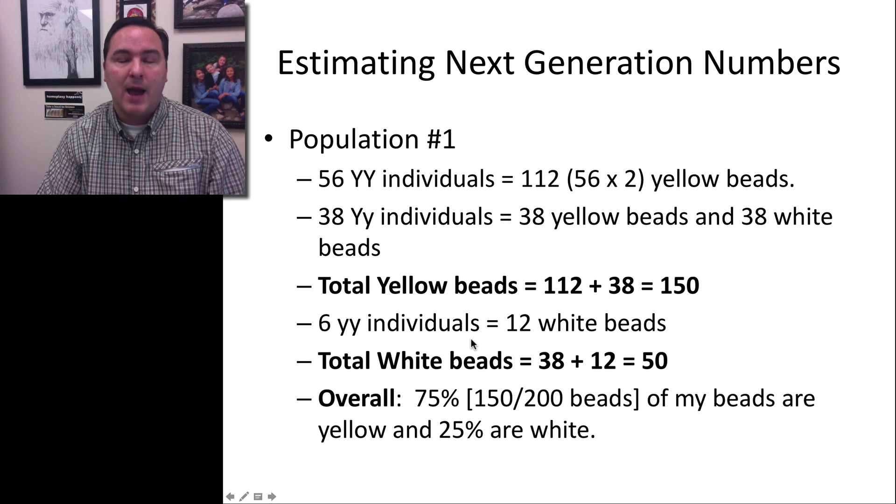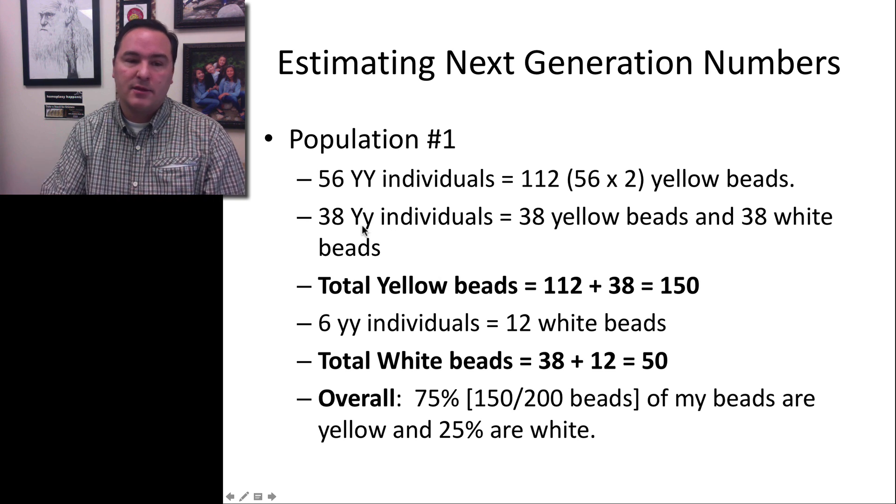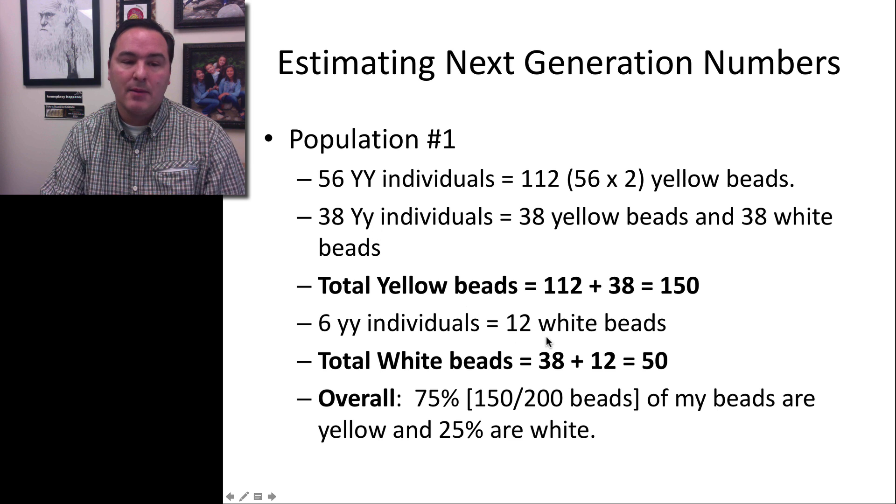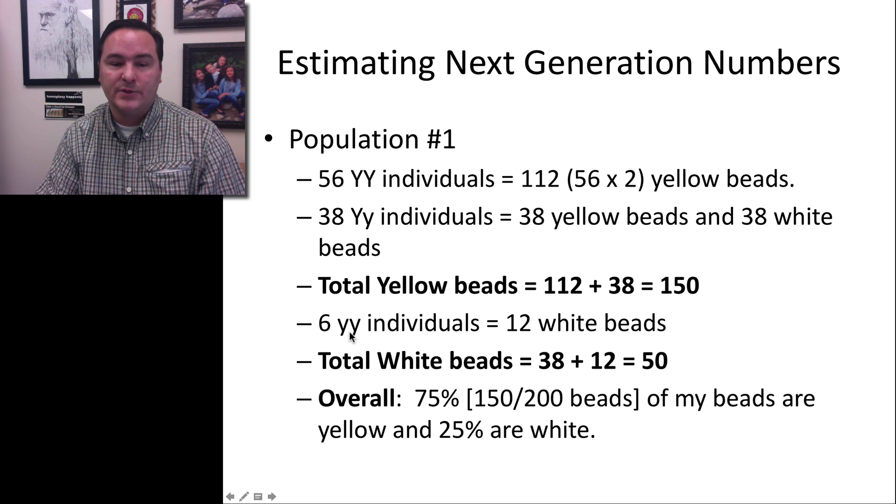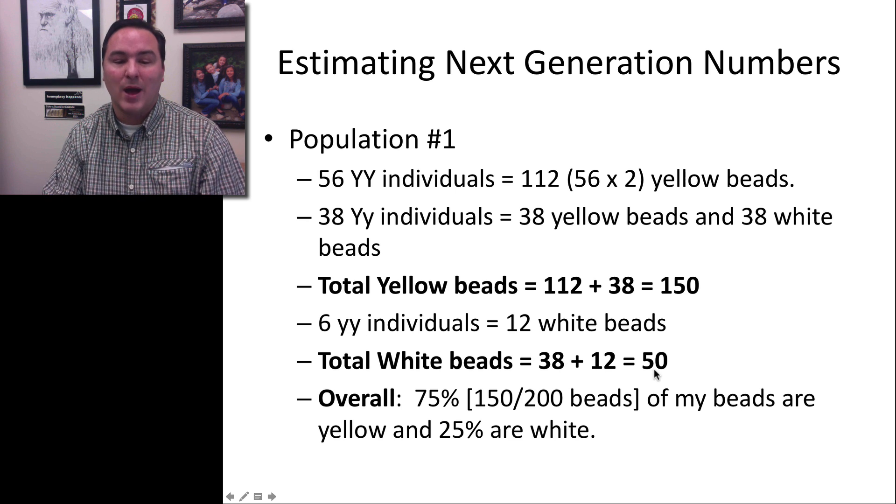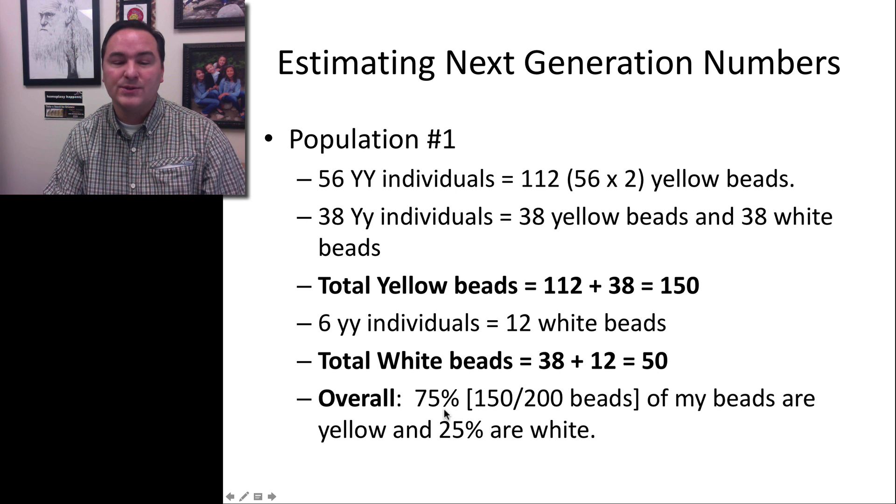From the, how many white beads are there? Well, we take the 38 white beads from the big Y little y population. We add the 6 little y little y individuals, which is 6 times 2 for 12 white beads. So you get 38 plus 12 equals 50.